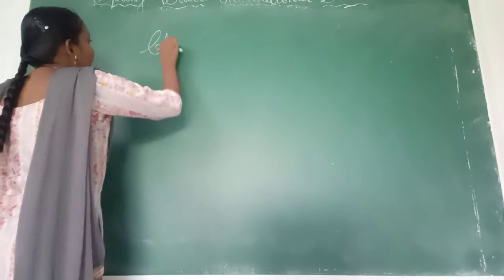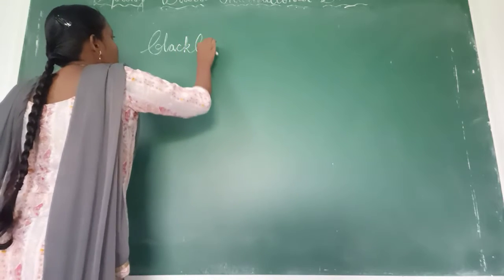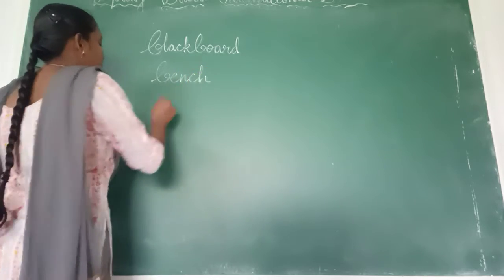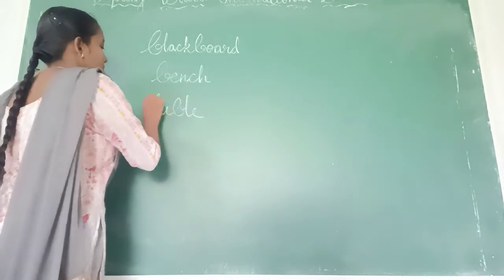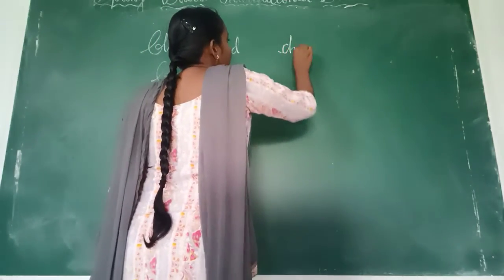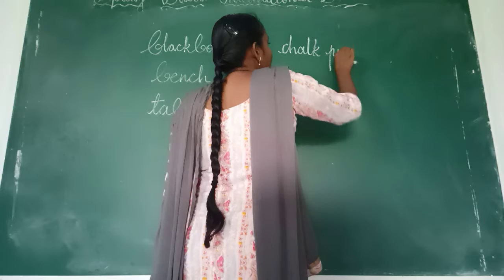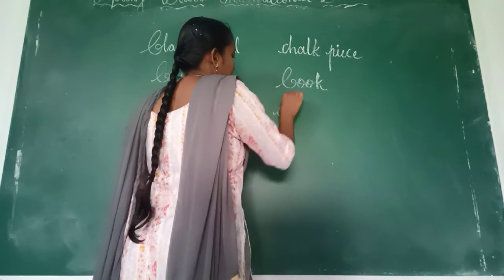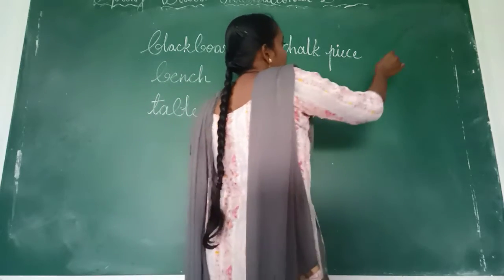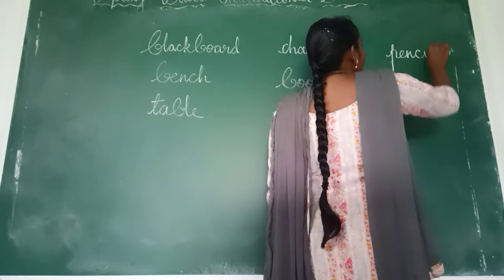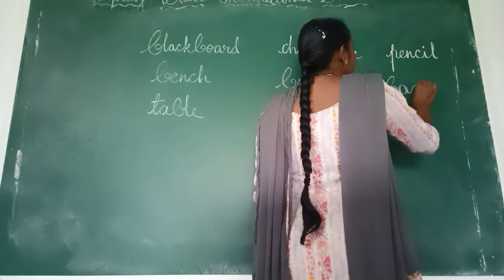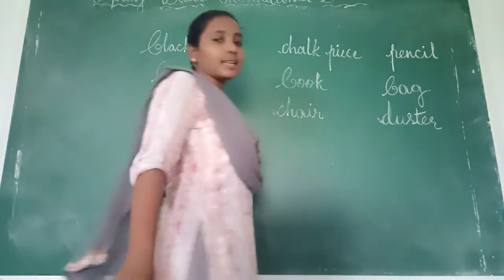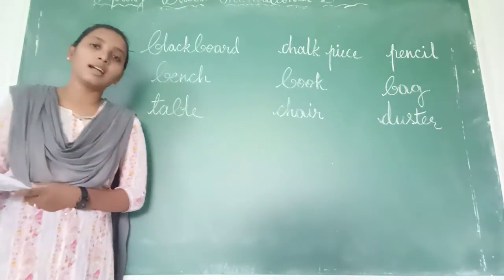Six things we can write. Blackboard. Bench. Table. Chappal. Book. Chair. Pencil. Bench. Duster. Yes or no, children? These things we can see in our classroom.